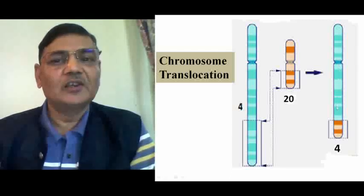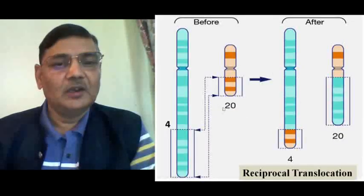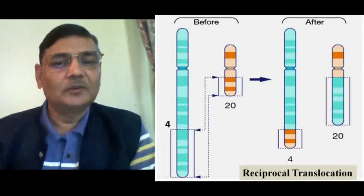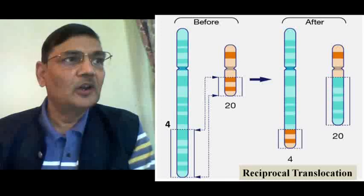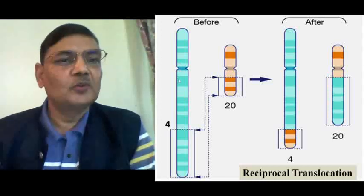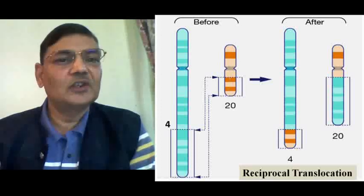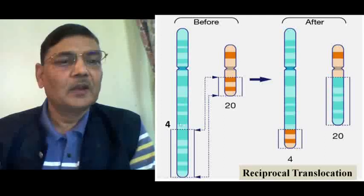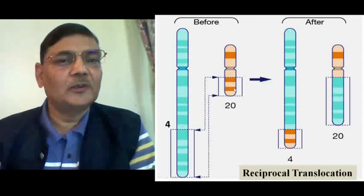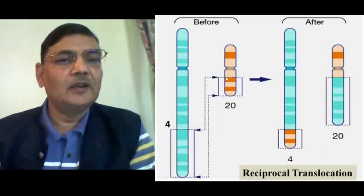We can say that chromosome 4 is a translocated chromosome because it has a portion of chromosome 20. Now we can understand the type of translocation, particularly reciprocal translocation. Reciprocal means there will be an exchange of chromosome segments between two non-homologous chromosomes. Here chromosome number 4 is on the left side and chromosome 20 is to its right. Two breaks occur — one in chromosome 4 and the other in chromosome 20. The segment of chromosome 4 gets shifted to chromosome 20, and the broken segment of chromosome 20 joins with chromosome 4.